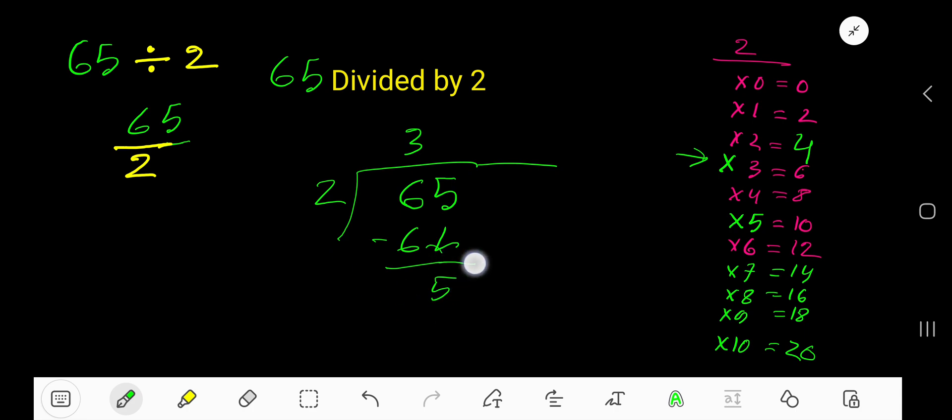2 goes into 5 how many times? 2 goes into 5. Look. 3 times 6, which is greater. So we have to stop here.